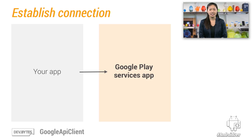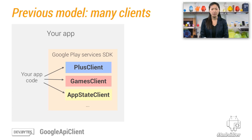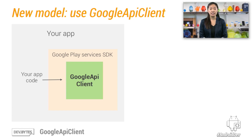So let's begin with the basics. To use all the great APIs provided by the Google Play Services app, you need to first open up a client connection to that process. To do this, you include the Google Play Services SDK in your app and call into the SDK to set up the connection. Now, there used to be a different client for each service, such as the plus client, games client, app state client, and so on. To use three services, you would have to create three clients and manage independent connections with slightly different nuances.